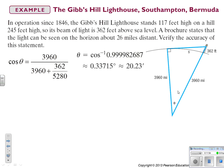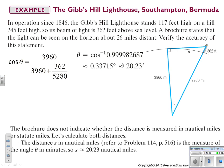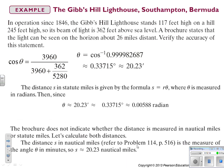But really what we want to find is not the theta, but the arc length. So that gives us 20.23 feet. So the distance s is in statute miles given by the formula s equals r times theta, where theta is measured in radians. Since theta is 20.23 feet, which is approximately 33,715 degrees, convert that to radians, which is 0.00588.